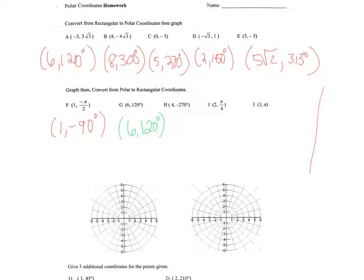Let me show you how to plot f, point f. Okay, so first, if this is r theta, we first are going to rotate. Negative is clockwise. So if we swing down, this is negative 90 degrees.